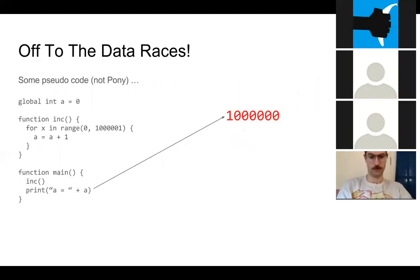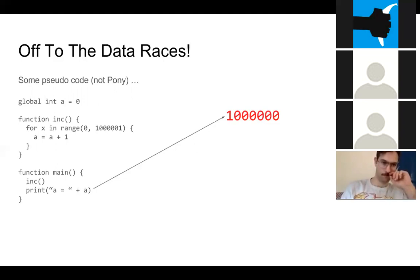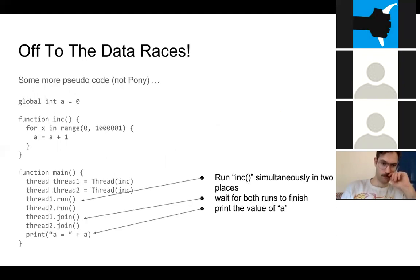Let's talk about data races. We have some code — not Pony, kind of a hybridized JavaScript/C — with a global variable called a, a function called inc which increments that global variable, and a main function that calls inc and prints the value of a. What we expect to get is one million as output, which is pretty straightforward and not unexpected.